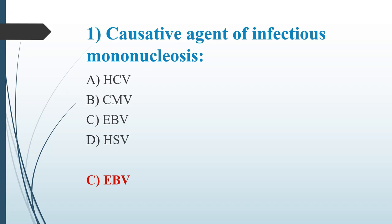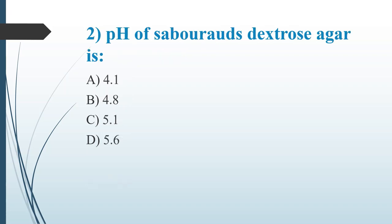Second question: What is the pH of Sabouraud dextrose agar? Option A: 4.1. Option B: 4.8. Option C: 5.1. Option D: 5.6.